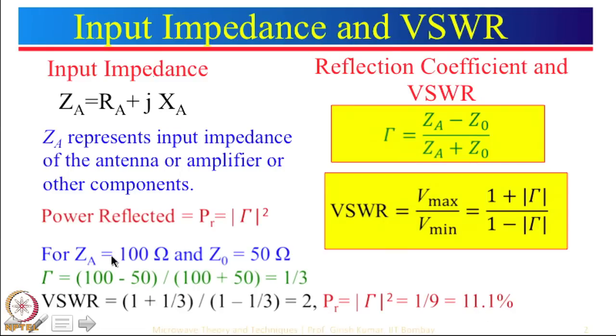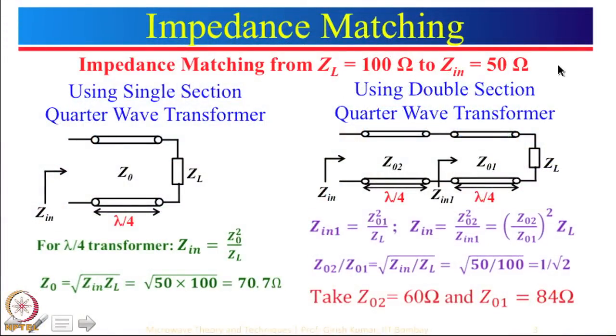We had seen in the previous case that a quarter wave transformer can be used to transform the load impedance to 50 ohm. We will take a case where we want to do impedance matching from 100 ohm to 50 ohm. One simple thing you may think is that if the load impedance is 100 ohm, I can put a 100 ohm resistor in parallel and I would get Z input equal to 50 ohm. But that is a bad solution because 50 percent of the power will get dissipated in that 100 ohm resistor. So that is not a good solution at all.